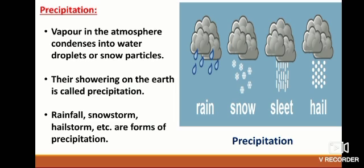Precipitation: Water vapor in the atmosphere condenses into water droplets or snow particles, and their falling on the Earth is called precipitation. Rainfall, snowstorm, and hailstorm are all forms of precipitation.